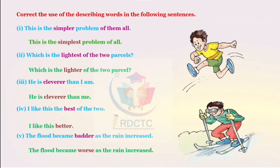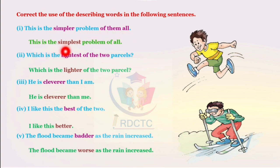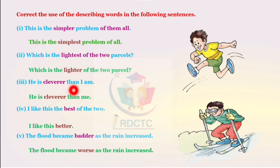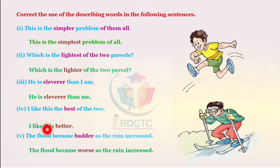The next question is: correct the use of the describing words in the following sentences. 'This is the simpler problem of them all' — correct: 'This is the simplest problem of all.' 'Which is the lightest of the two parcels?' — correct: 'Which is the lighter of the two parcels?' 'He is cleverer than I am' — correct: 'He is cleverer than me.' 'I like this the best of the two' — correct: 'I like this better.' 'The flood became better as the rain increased' — correct: 'The flood became worse as the rain increased.'